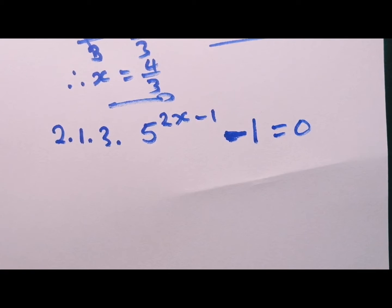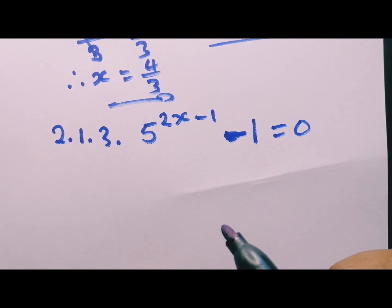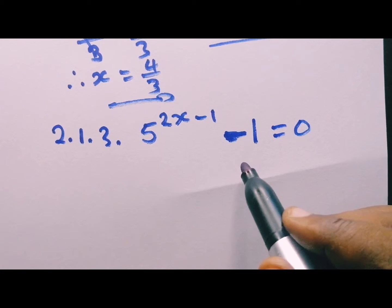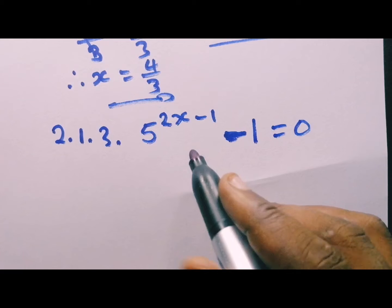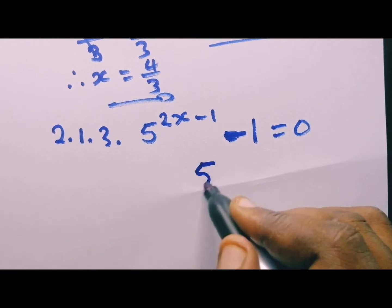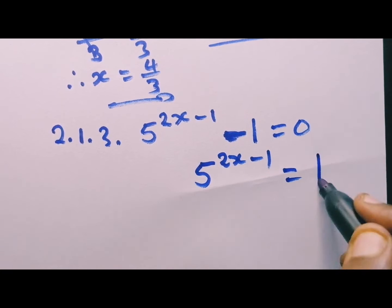Now 2.1.3, we are still solving for x, but in this case it's kind of unique. So the first thing you do, you fix this. You take this number to the other side. So we are left with 5 to the 2x minus 1 equal to 1.